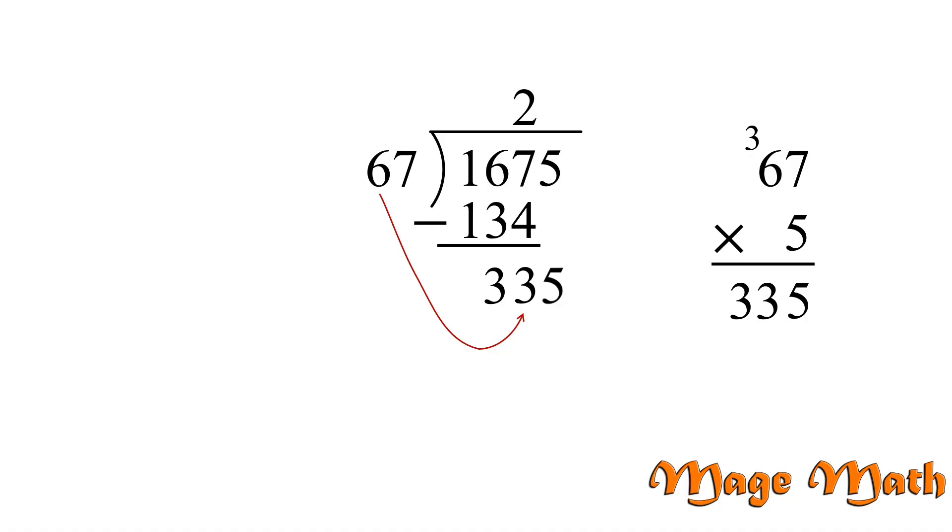So we'll write 5 above in our problem. 5 times 67 is 335. And now we draw a line and subtract. 335 minus 335 is 0. That means we have a remainder of 0. So 1,675 divided by 67 is 25. Great work.